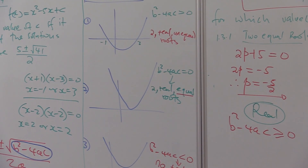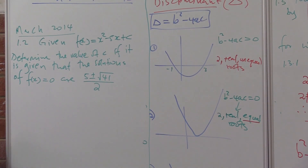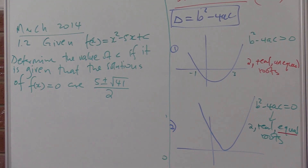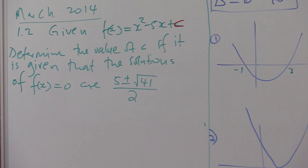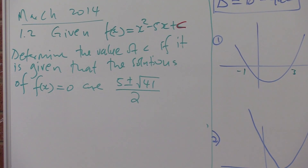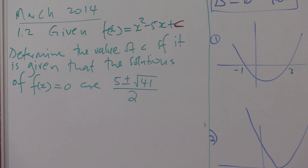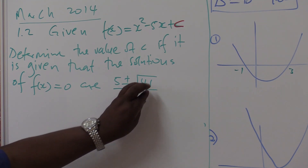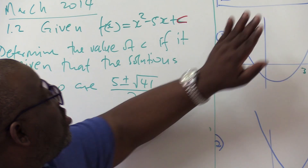Let's look at the last problem, taken from March 2014, question 1.2. Given that f(x) equals x squared minus 5x plus c, determine the value of c, if it is given that the solutions of f(x) equals 0 are given by 5 plus or minus square root of 41 all over 2. This is the same form as x equals minus b plus or minus square root of b squared minus 4ac all over 2a. So the 41 is our discriminant — it is hidden under the square root sign.